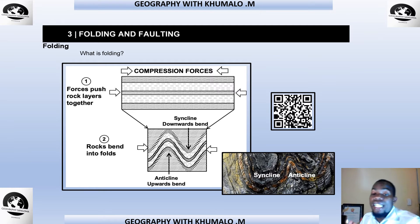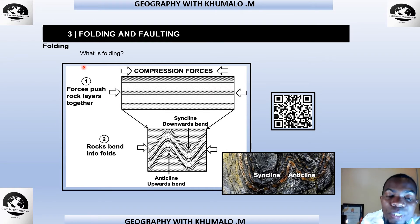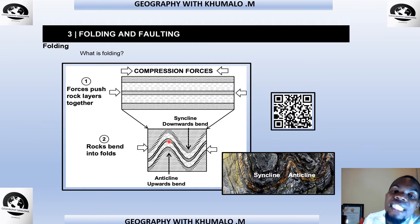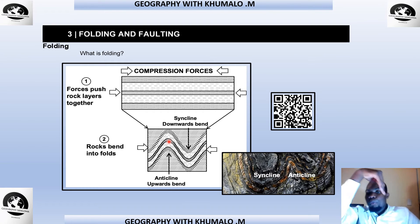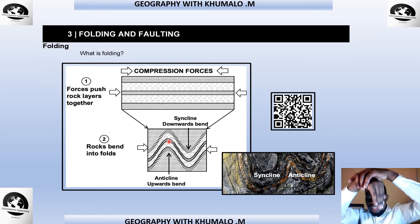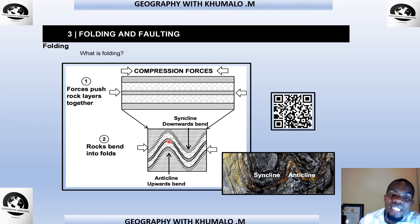We also covered folding and faulting. A fault is a crack in the rock, while folding is when rock layers bend. In folding, compression forces push rock layers together. A syncline is a downward bend, and an anticline is an upward bend. Imagine pressing your hands together — the downward bend is the syncline and the upward bend is the anticline.